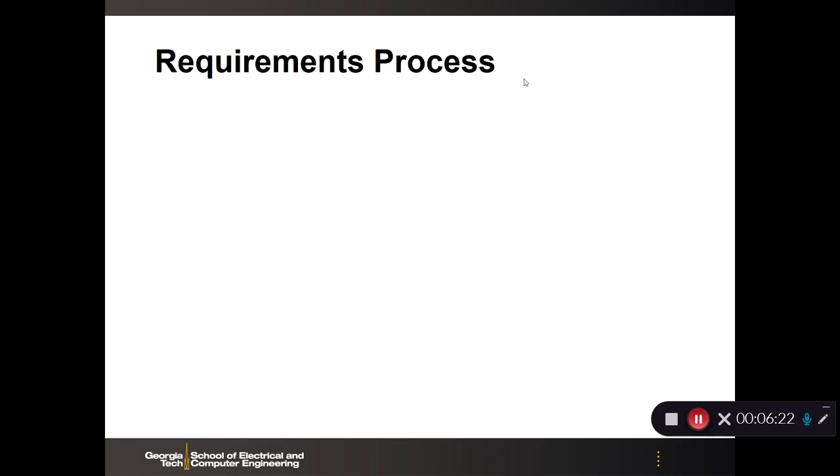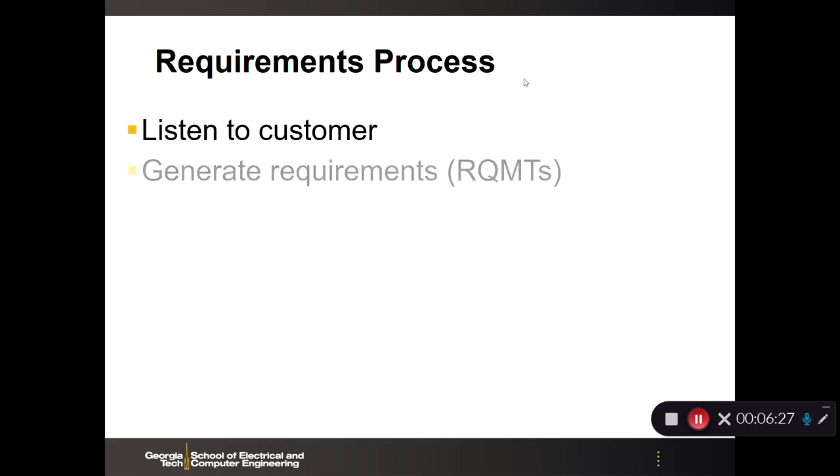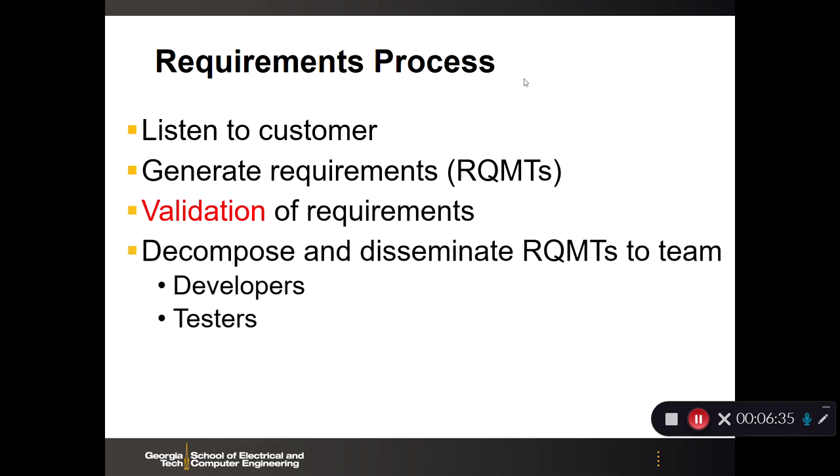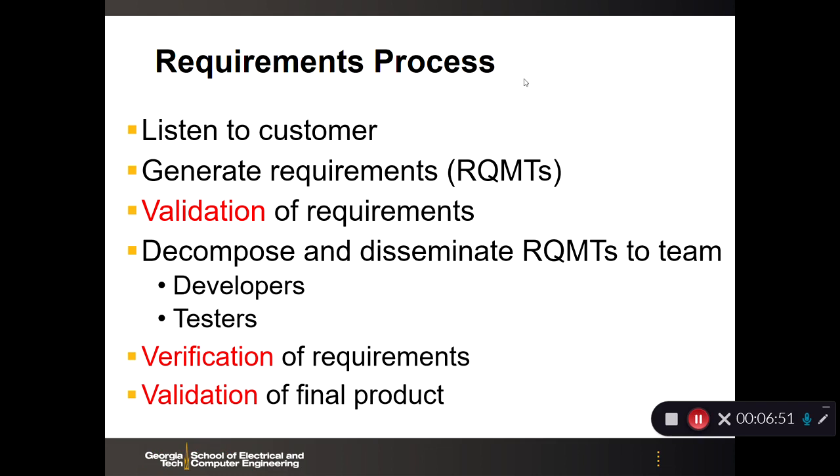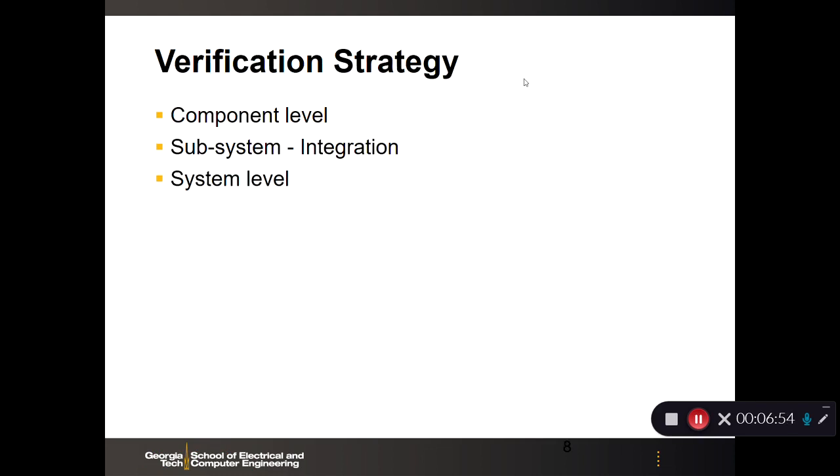So the requirements process looks something like this. Listen to the customer. That's one of the most important things. Generate requirements off of that discussion with the customer. Validate the requirements. Then decompose and disseminate the requirements to the team. And the team can be both developers and testers. You want independence in your team, meaning you don't want the same person testing it who developed it. And then you do verification of the requirements. And then you finalize it and bookend it with validation of the final product. So that's part one of three lectures and I'll see you in lecture two.